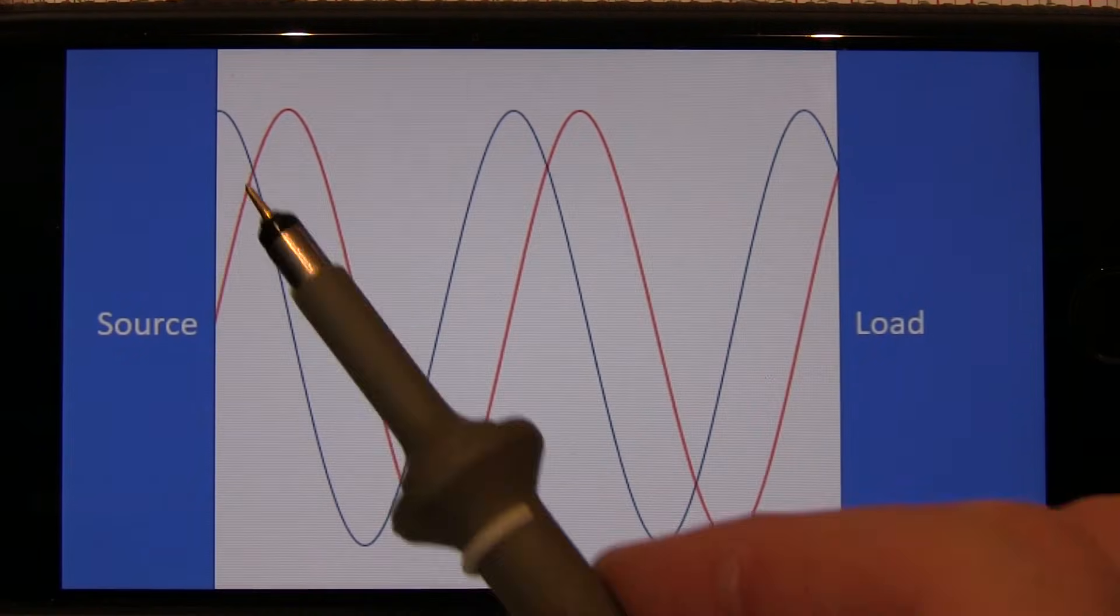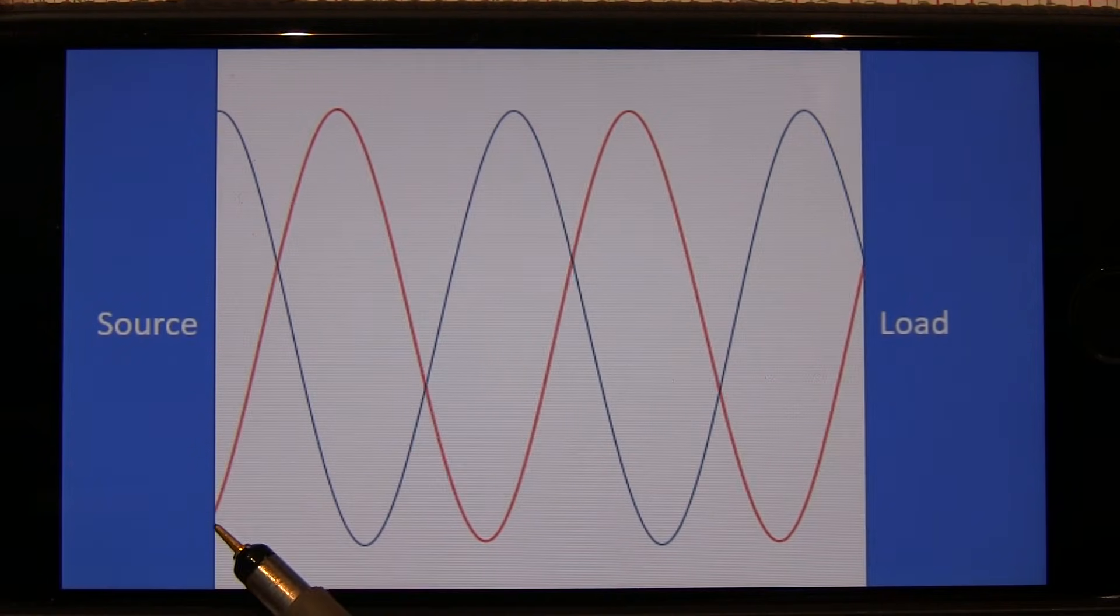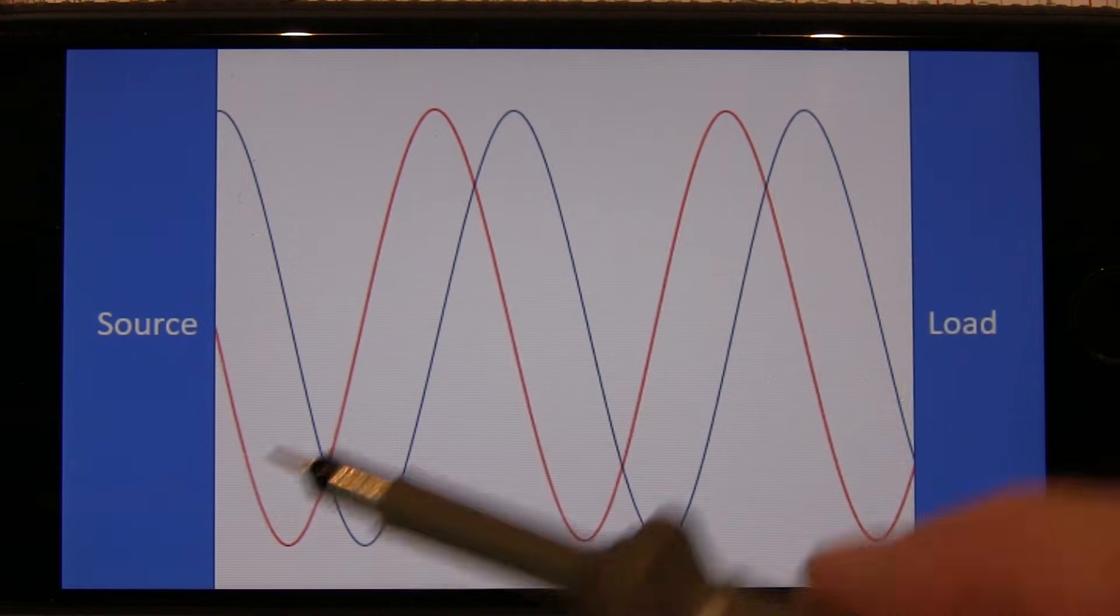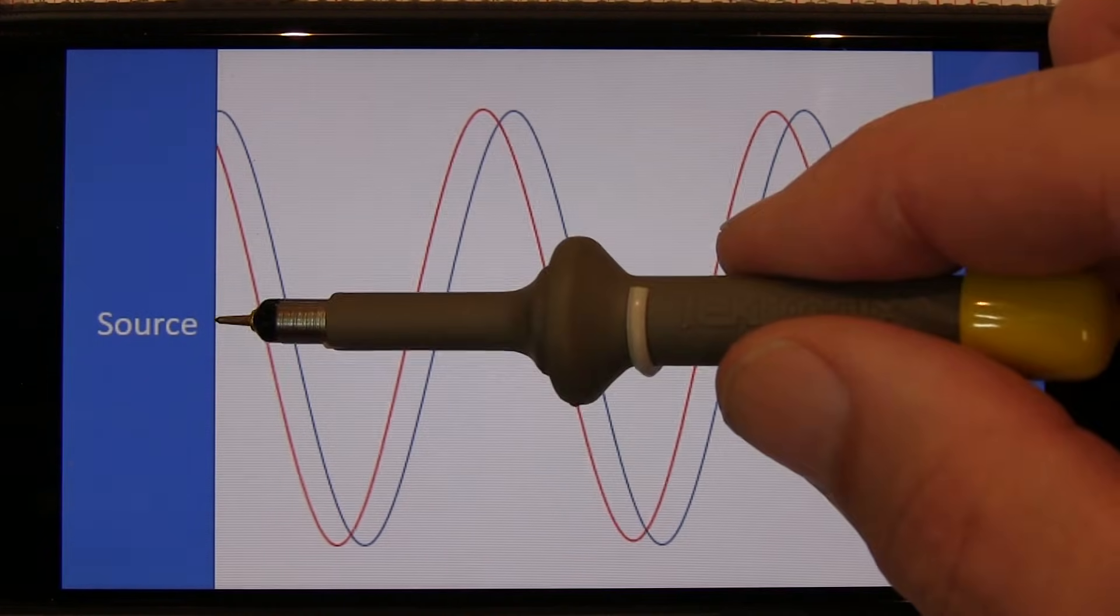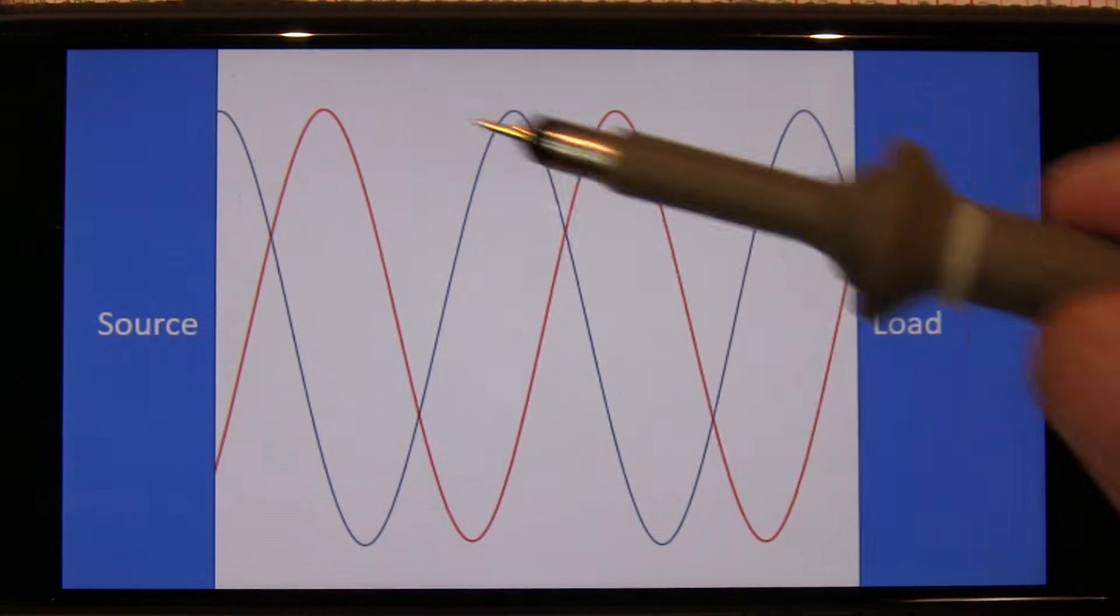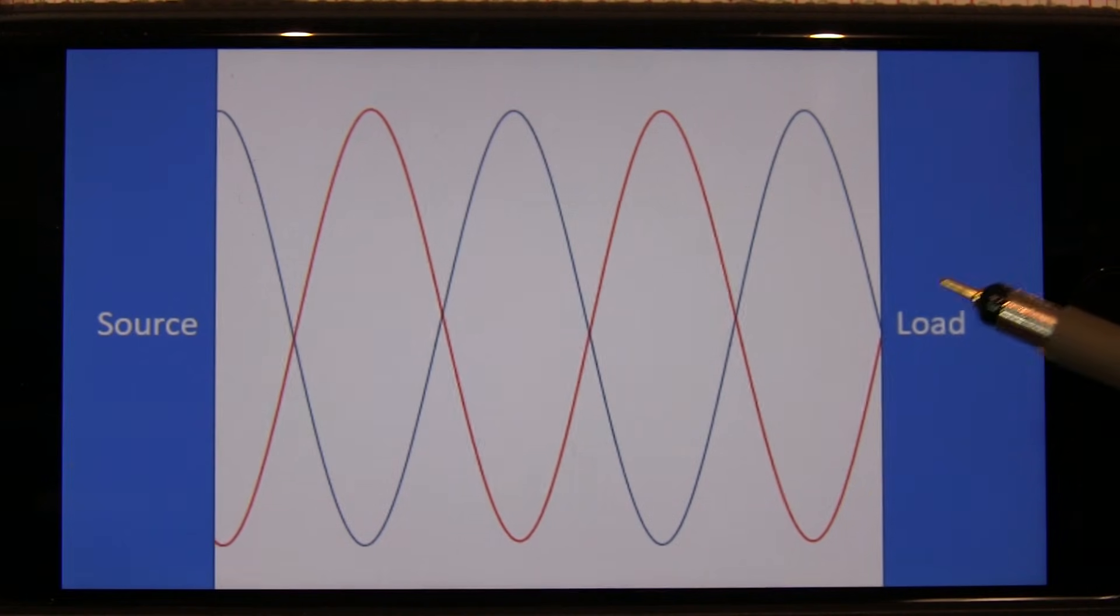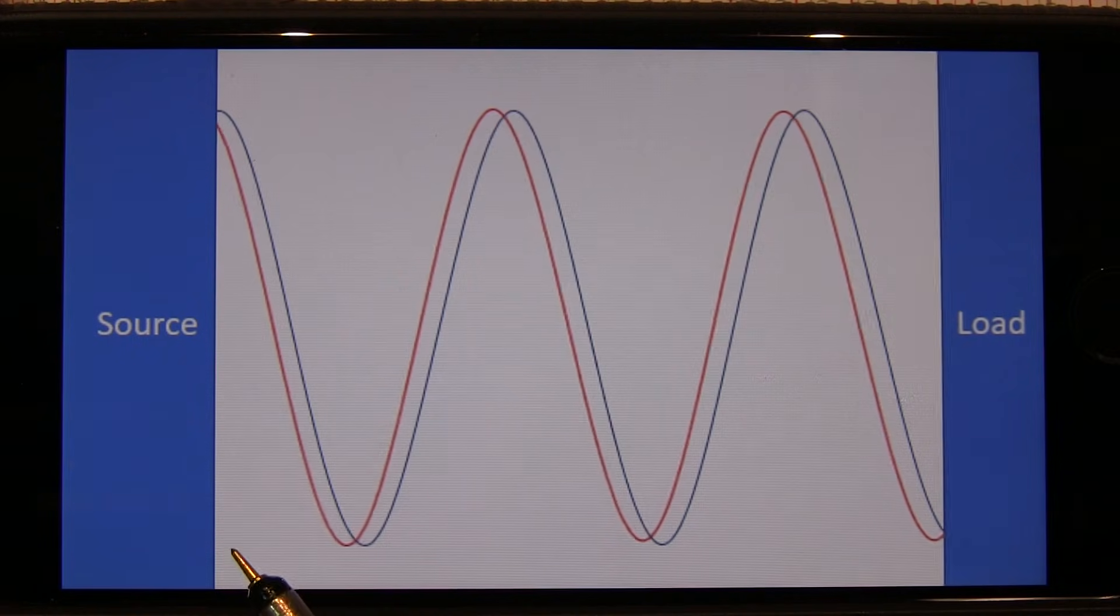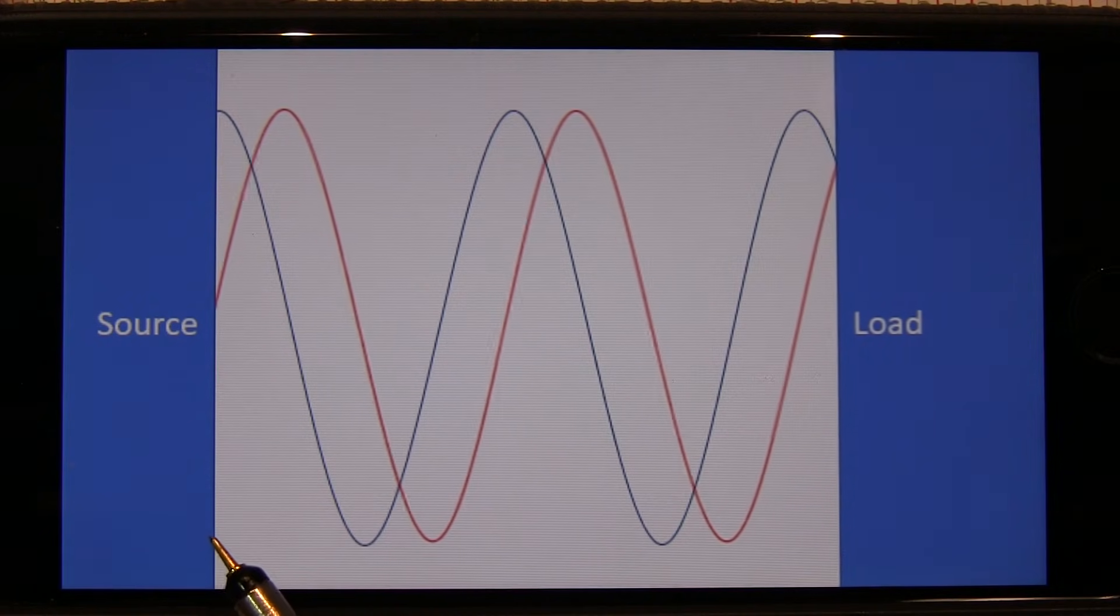And since we said this was an open circuit at the load, that's the condition where the load impedance is being matched at the source, which means we're going to be an even multiple of half-wavelength long. Now the opposite extreme is when the reflected waveform is exactly 180 degrees out of phase from the incident waveform. When that happens, those two voltages add up, they sum to zero.